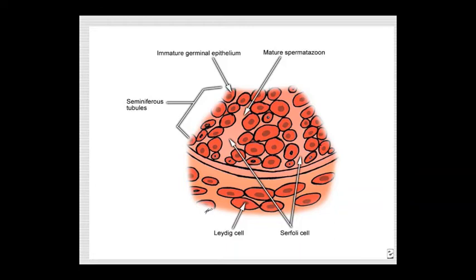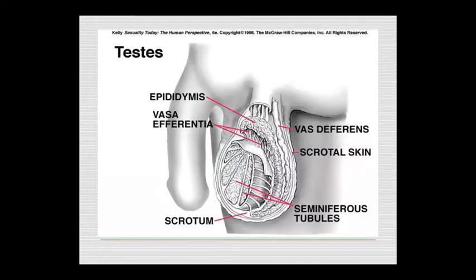The seminiferous tubules contain immature germinal epithelium which matures into spermatozoa. You can see the scrotum in relation to the testes, and the seminiferous tubules are shown as such.